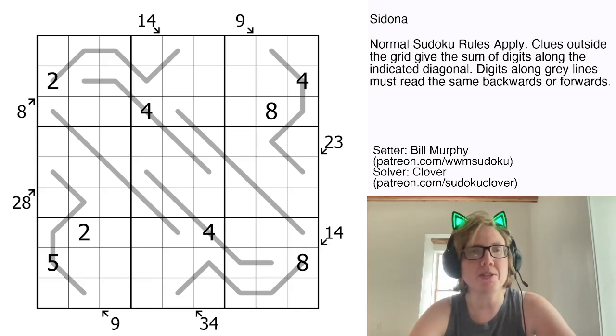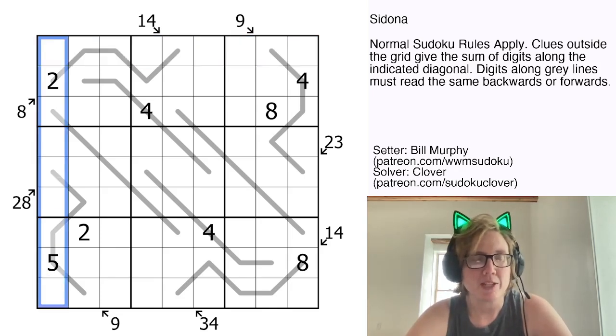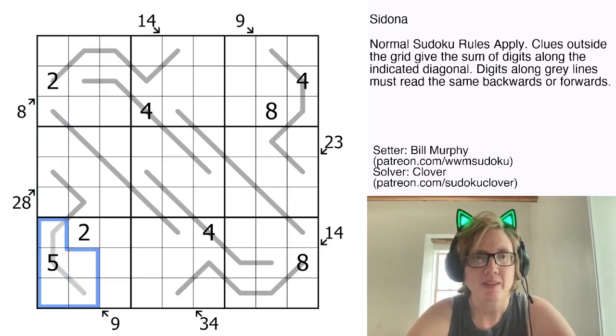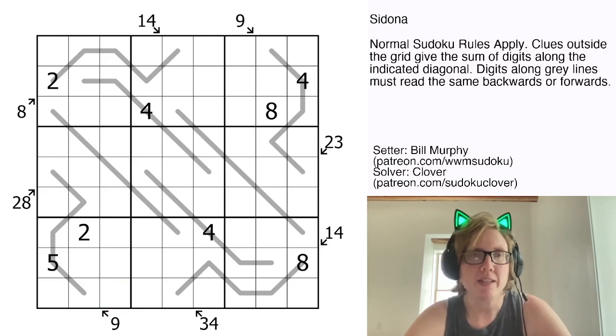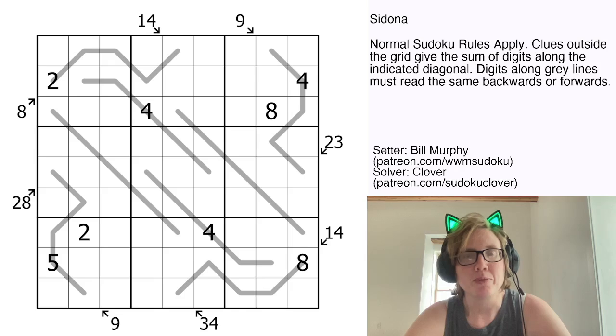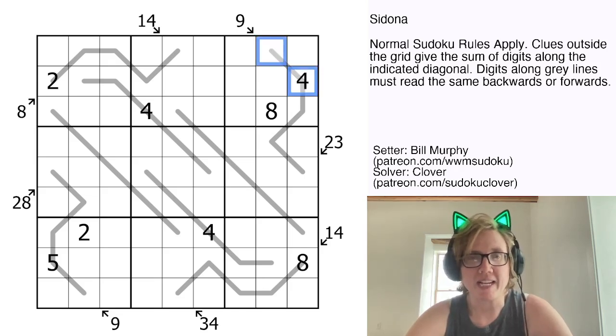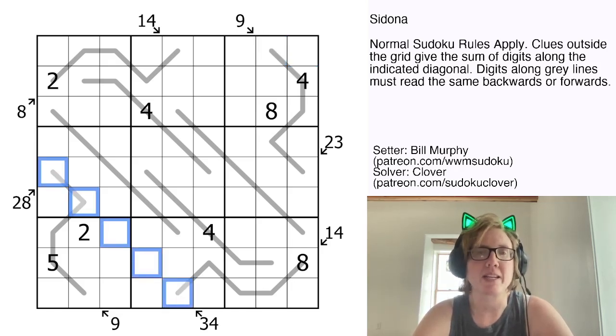So we have normal Sudoku rules. So we're placing the digits 1 through 9, once each in each row, each column, and each outlined 3x3 region. And then there are two variants, one of them is littlekiller, so that's those arrow clues outside of the grid, which tell you that the digits along the marked diagonal sum to the total indicated by the clue. So for instance we have a 9 here, kind of above the top right of the grid, and that tells us that these two digits have to sum to 9. Or this 34 tells us that these five digits together have to sum to 34.